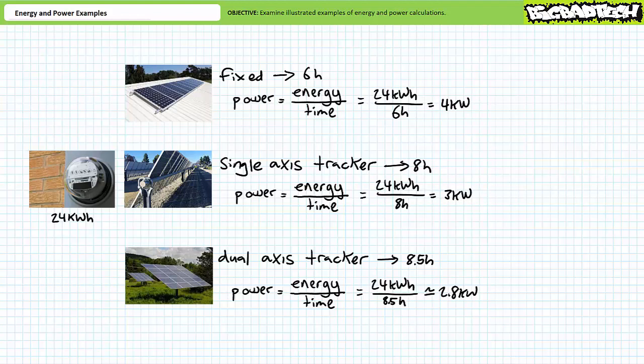Notice how the fixed stationary mount necessitated a larger array to extract the desired 24 kilowatt hours of energy each day than did the dual axis tracker. The dual axis tracker works longer given it's capable of following the sun's orientation and elevation through a larger portion of the sky, whereas the fixed roof-mounted array only directly experiences a portion of the sun's path. Allow me to comment briefly about the term peak sun hours and variable power output. Consider the fixed tilt stationary mount which regularly experiences six hours of peak sun.